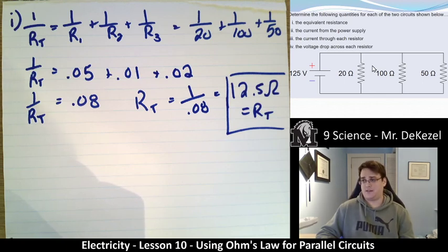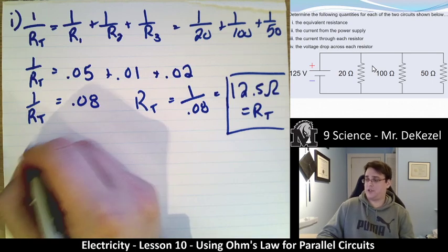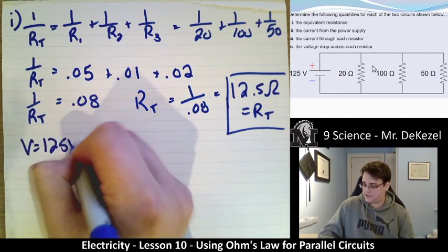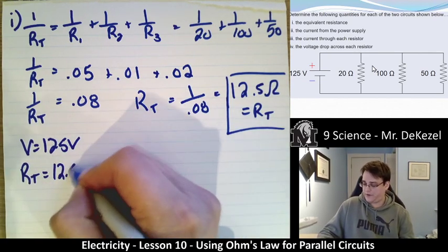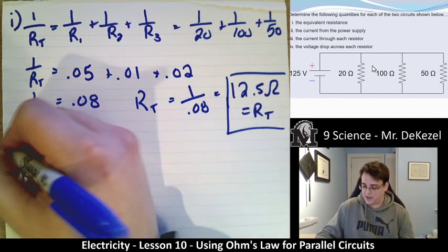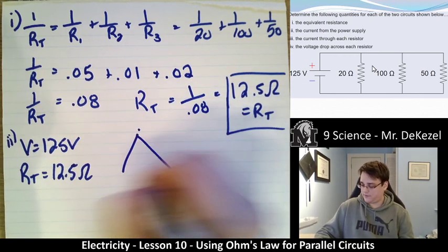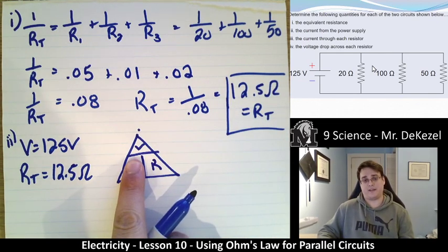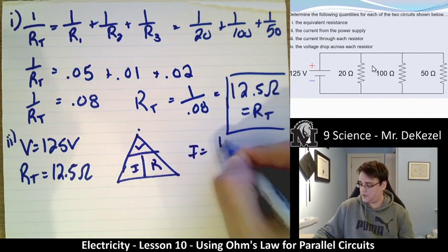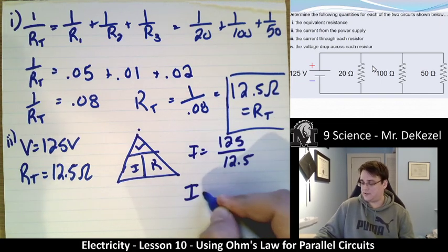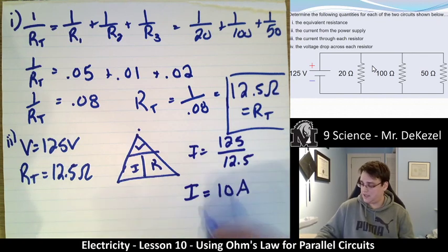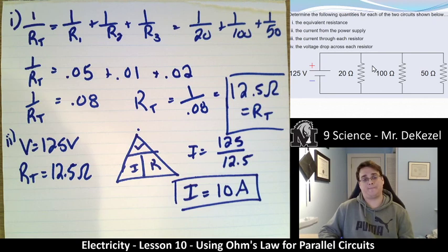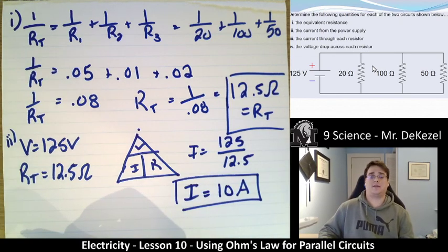Now that we know the total resistance, we can find the total current from the power supply. We have a voltage of 125 volts and a total resistance of 12.5 ohms. Using the triangle — I cover up current — that's voltage divided by resistance. So current equals 125 divided by 12.5. The current coming out of the battery would be 10 amps. I took the total voltage and the total resistance and divided them to find the total current of 10 amps.